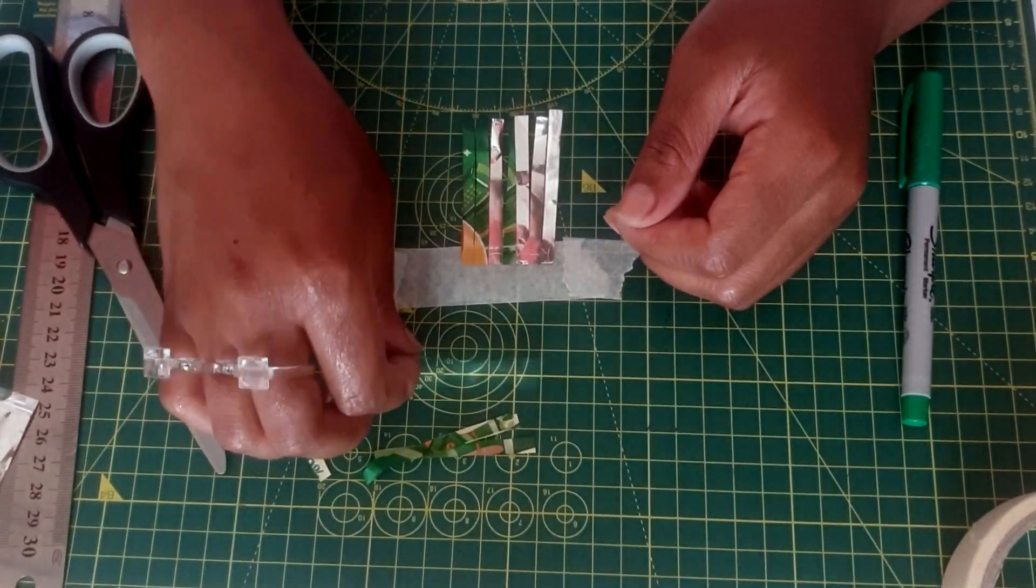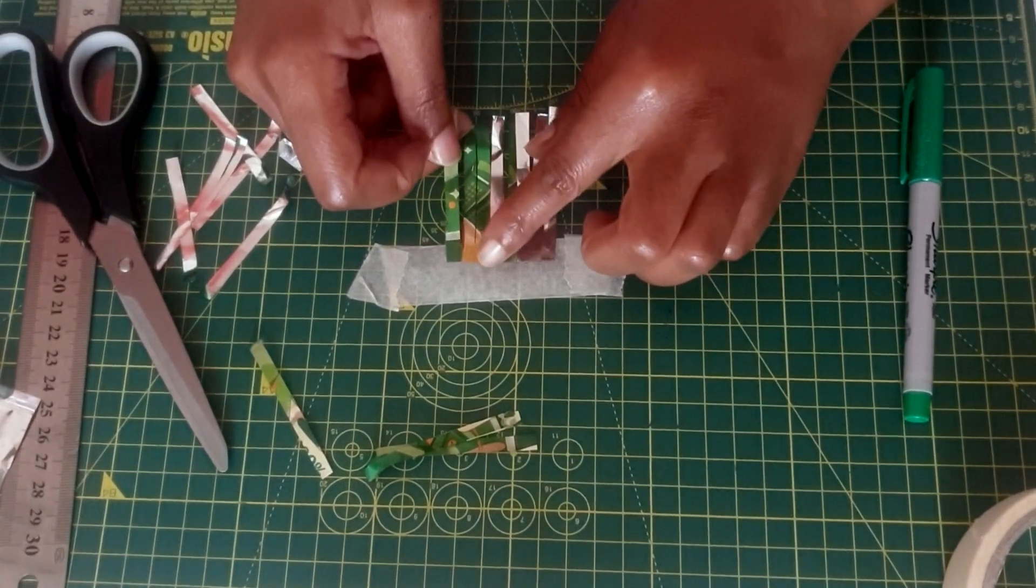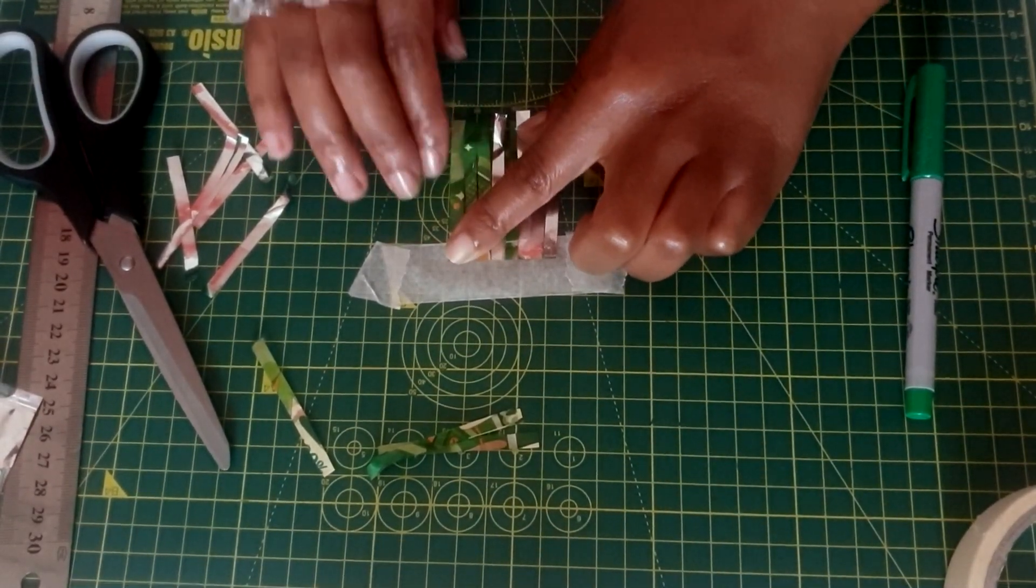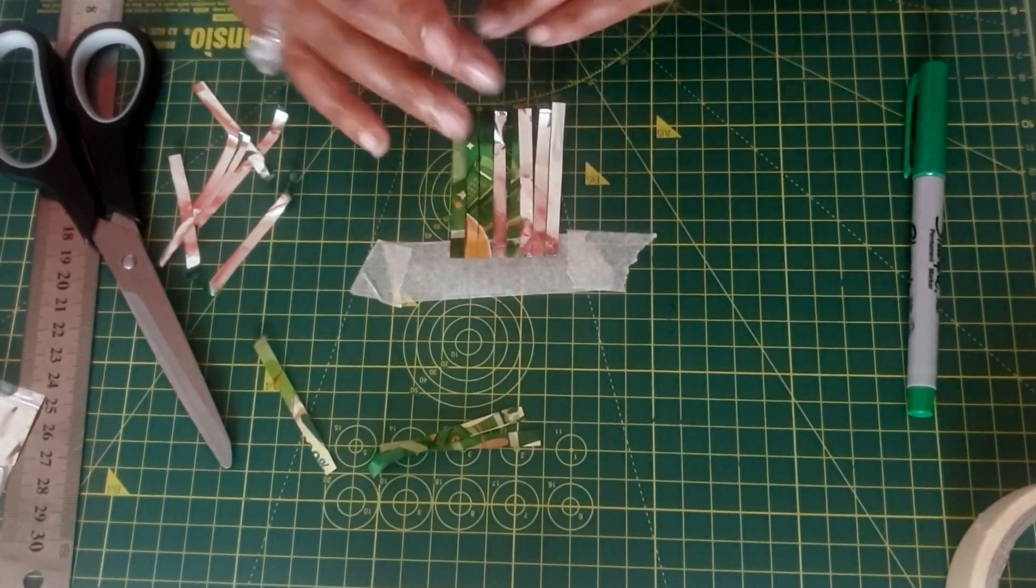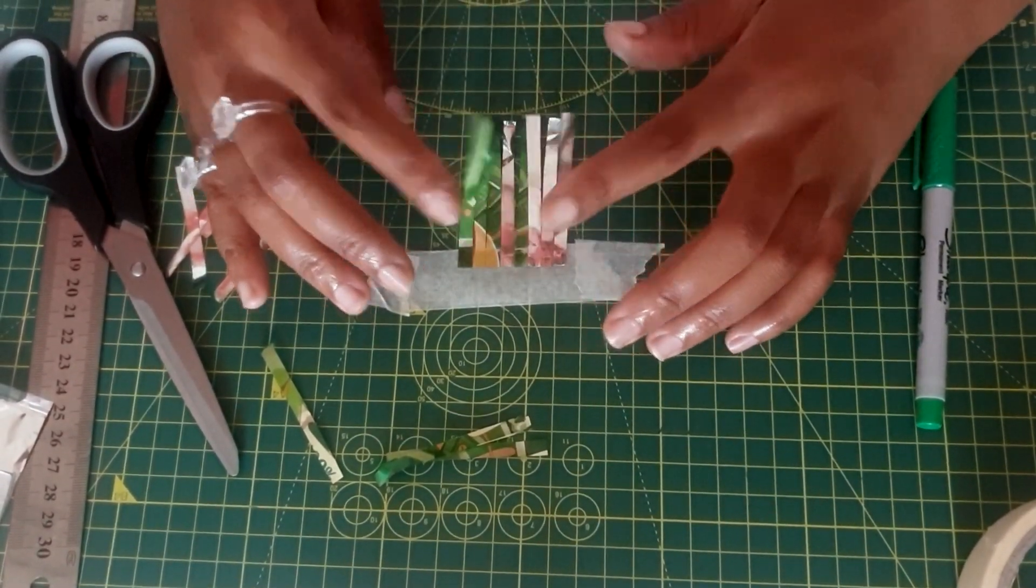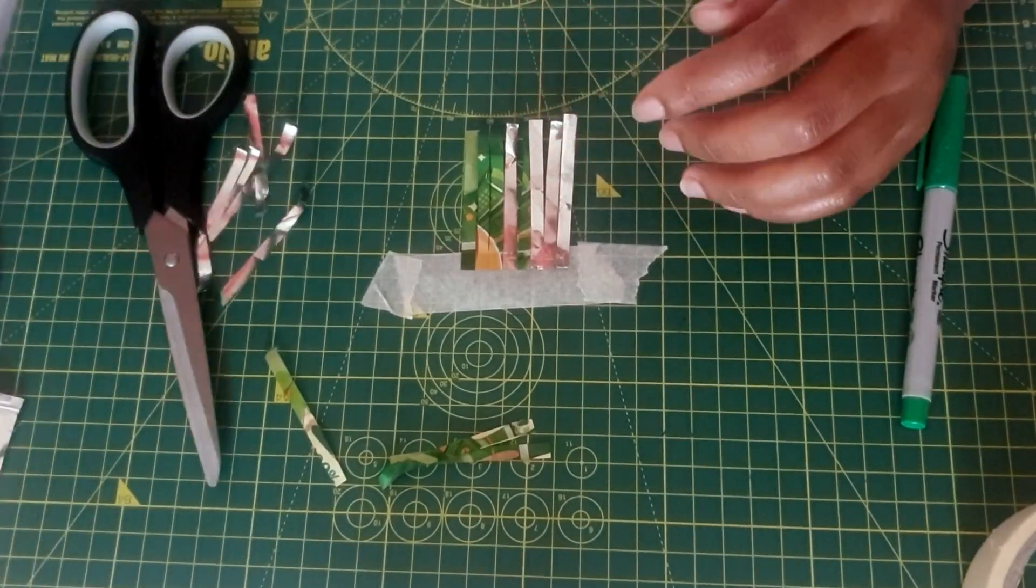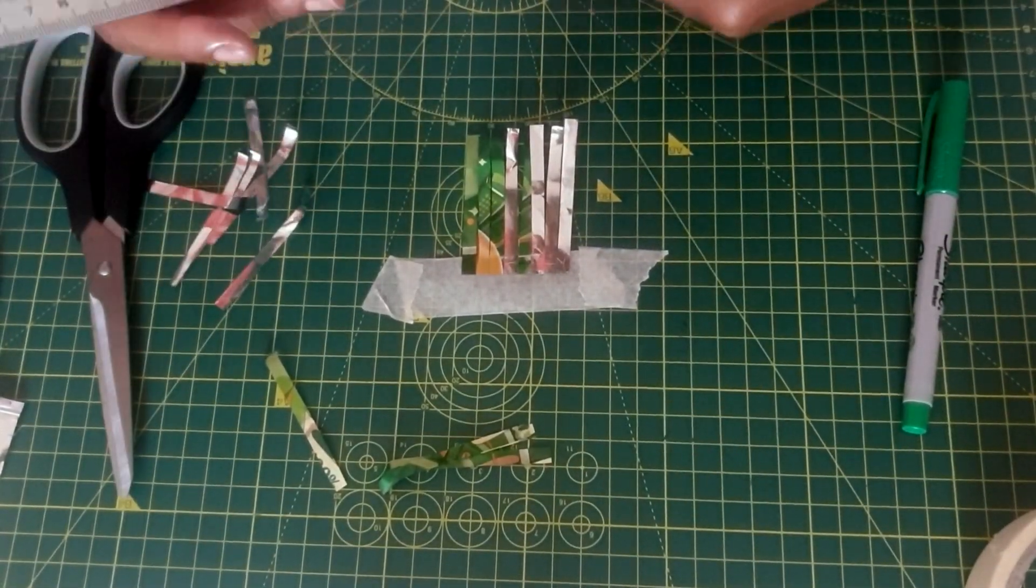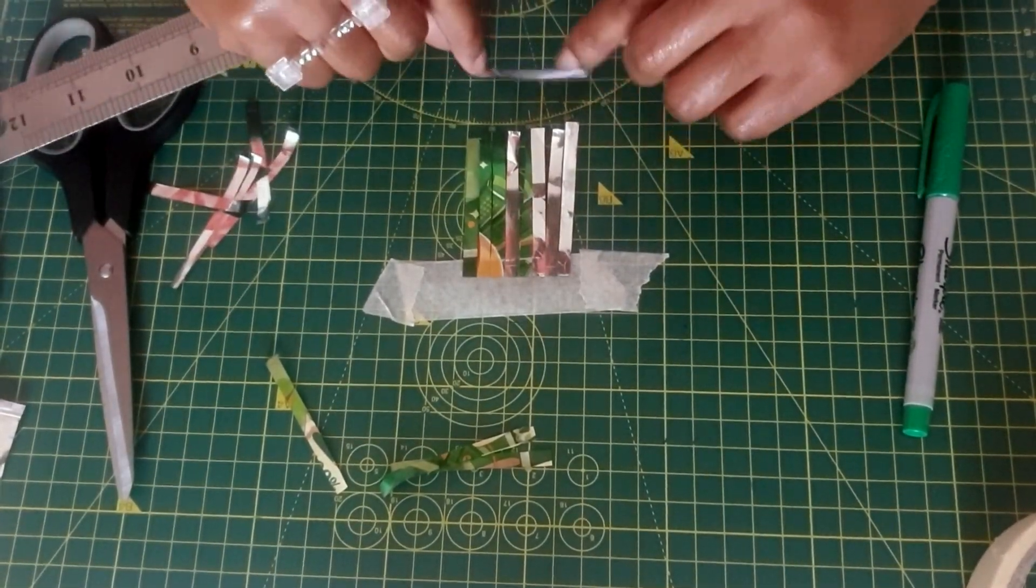Now those strips are nicely laid out, we can start to weave our weft strips. I'd advise using a ruler to help keep the warp strips in place so that you can easily slide the weft strips into place.